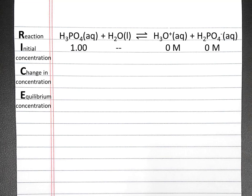Our next step is to create a RICE table. Our initial concentration of phosphoric acid is 1, and our initial hydronium and dihydrogen phosphate concentrations will be 0. Since we don't have any product, our change in concentration for phosphoric acid will be negative x, and our change for hydronium and dihydrogen phosphate will be positive x. So the equilibrium concentrations will be 1 minus x, x, and x.